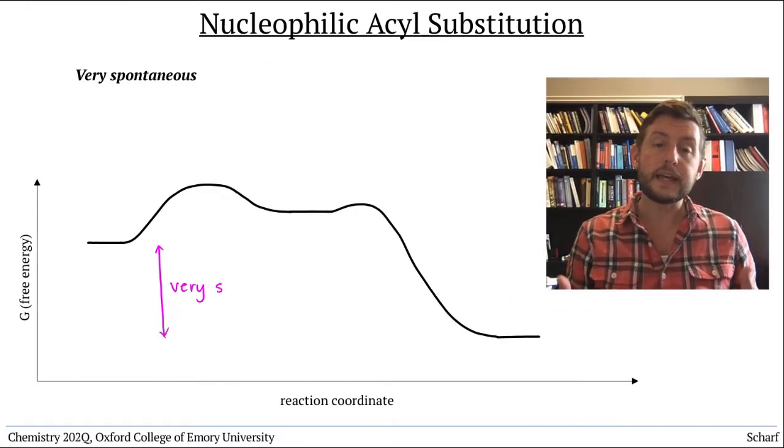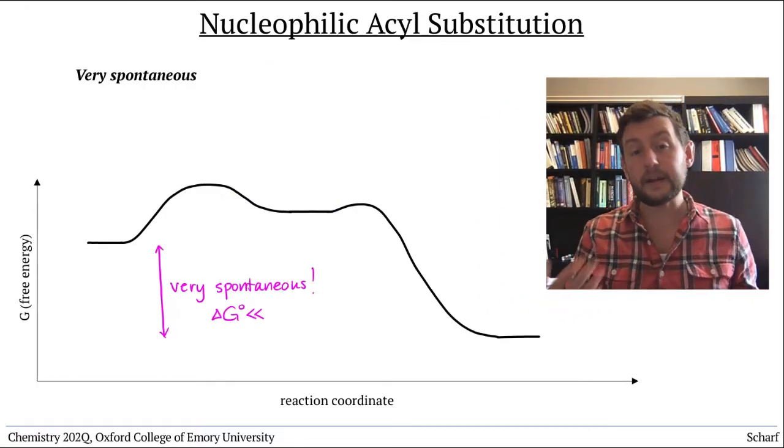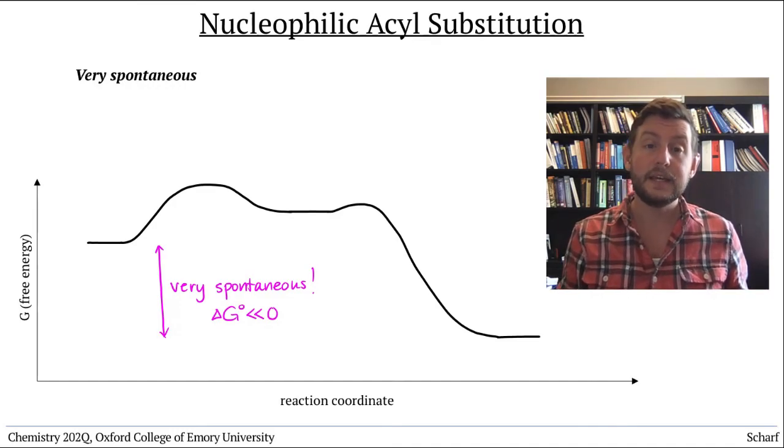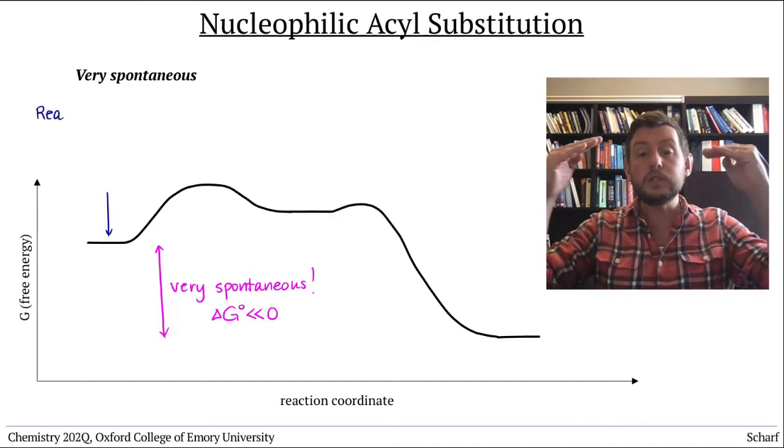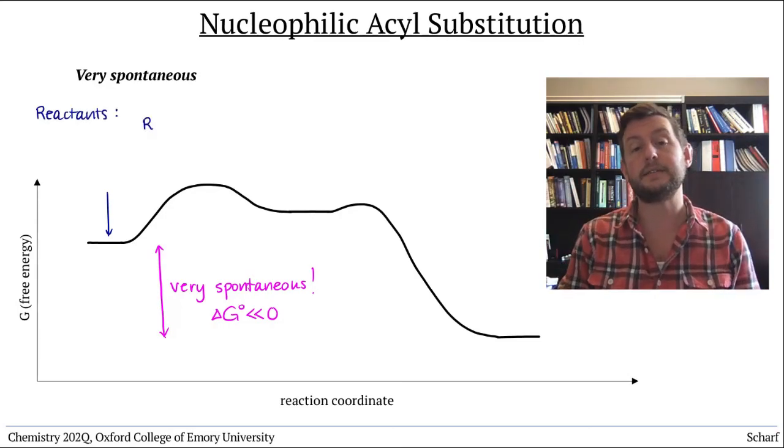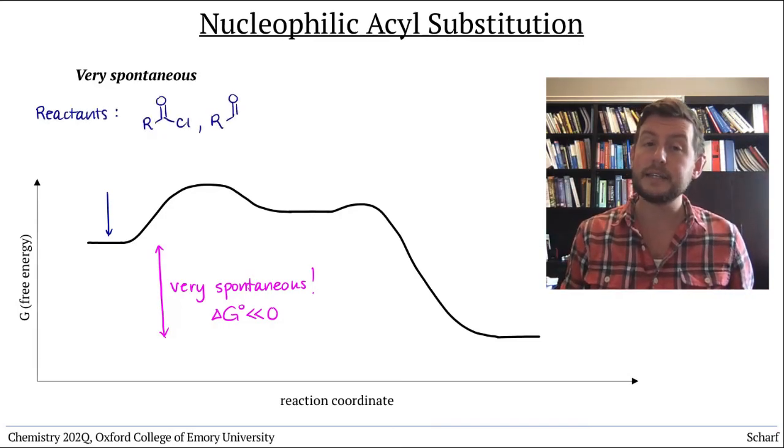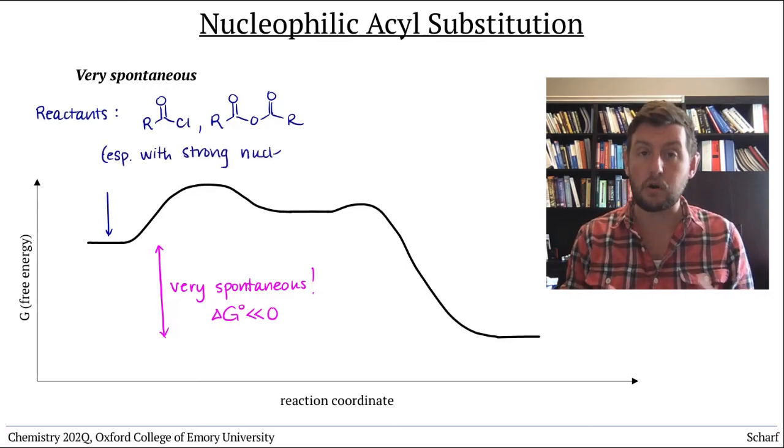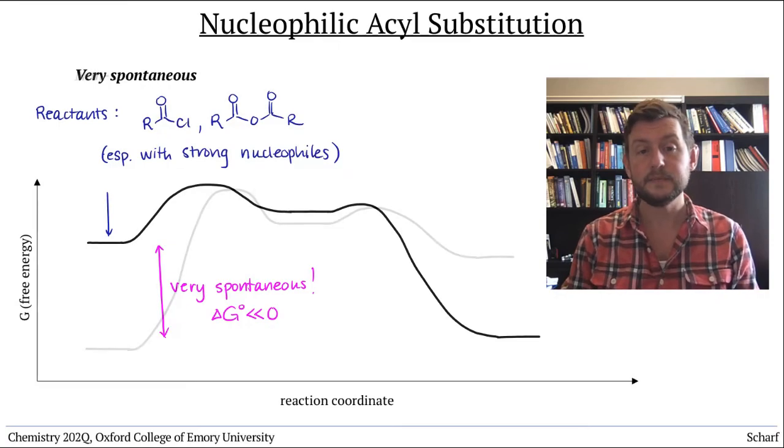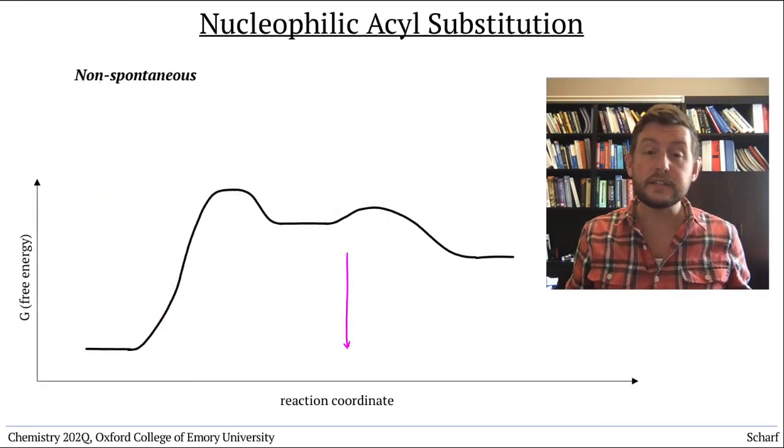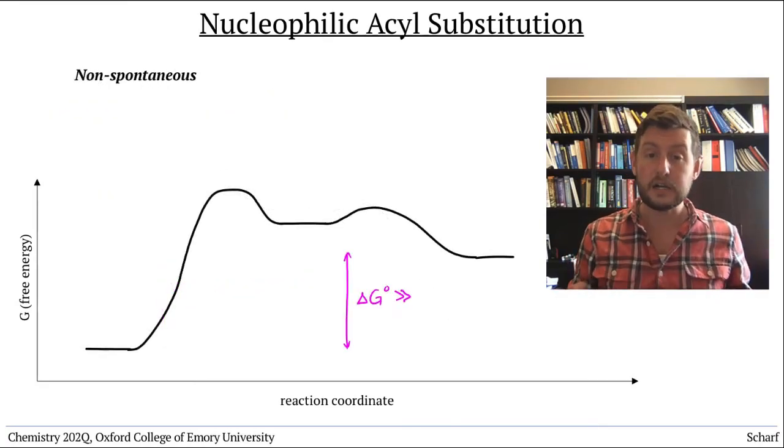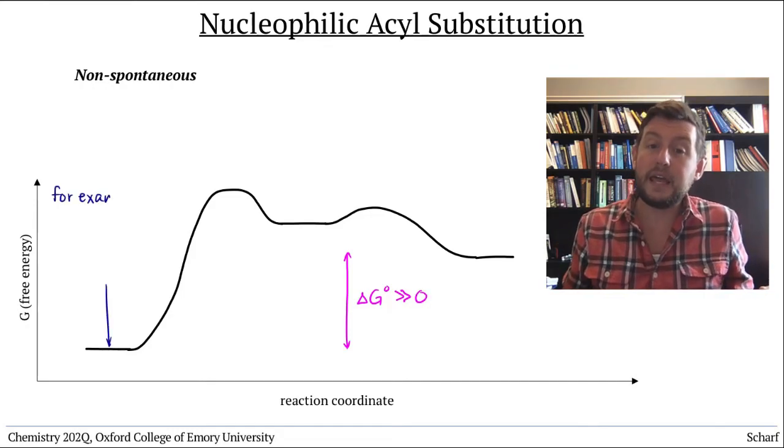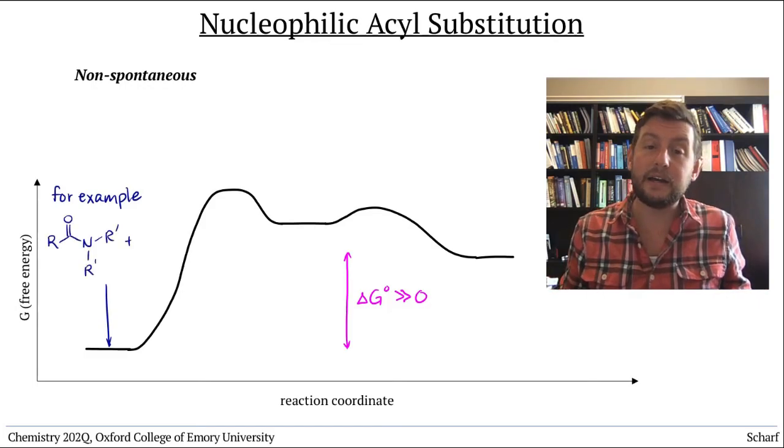Some nucleophilic acyl substitution reactions are very spontaneous, and they happen quite rapidly and readily. These reactions typically involve the most electrophilic of the carboxylic acid derivatives, acid chlorides and anhydrides, especially when they react with strong nucleophiles. Other nucleophilic acyl substitution reactions are non-spontaneous, and they just don't happen at all, like the reaction of an amide with the chloride ion, for instance.